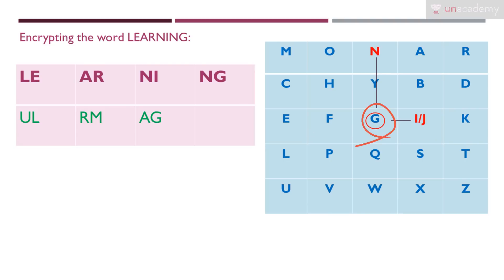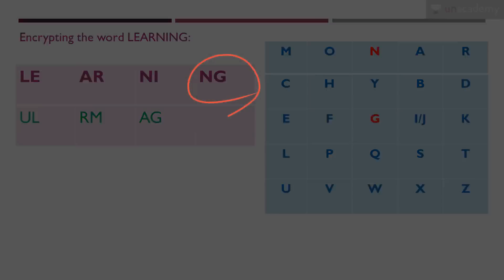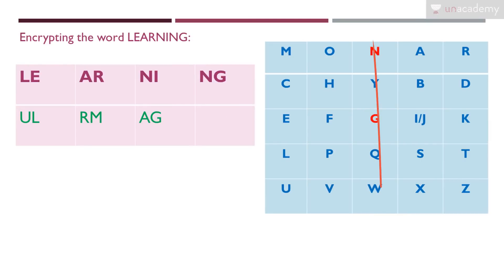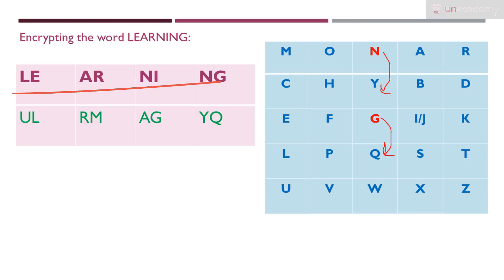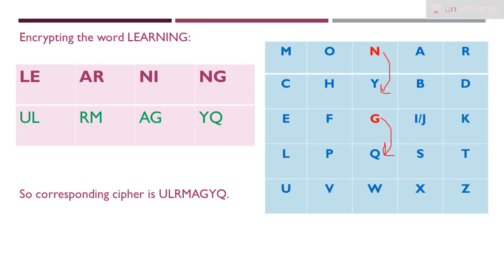Next pair: NG. N is here and G is here — both on the same column. So we replace each with the letter beneath: for N we get Y, and for G we get Q. So NG becomes YQ. Therefore, the word 'learning' encrypted using Playfair cipher becomes UL, RM, AG, YQ — the cipher text is U, L, R, M, A, G, Y, Q.